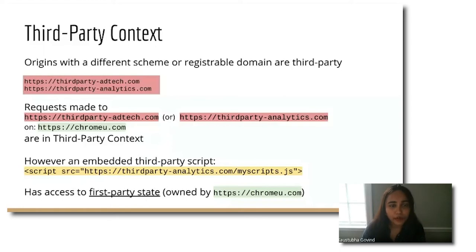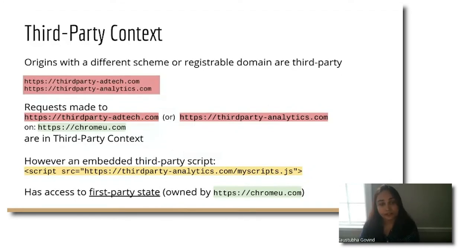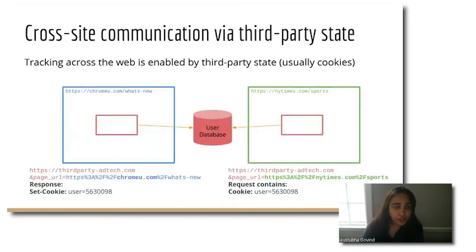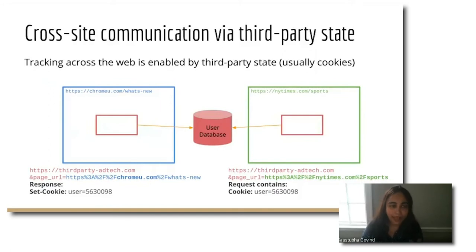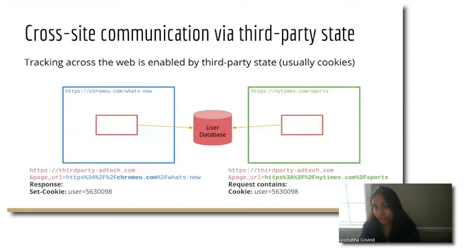A key thing to remember: when we're sourcing third-party scripts and importing them into a top-level document, that script now has access to first-party storage and any script-visible cookies owned by that top-level site. Today, most cross-site tracking is enabled via state — by and large third-party cookies. In this scenario, an ad iframe embedded in chromeu.com could set a cookie with a user ID. The next time you visit another page that embeds a resource from the same site, they get that cookie plus the location of the page you're at — and that's how a user profile essentially gets built.